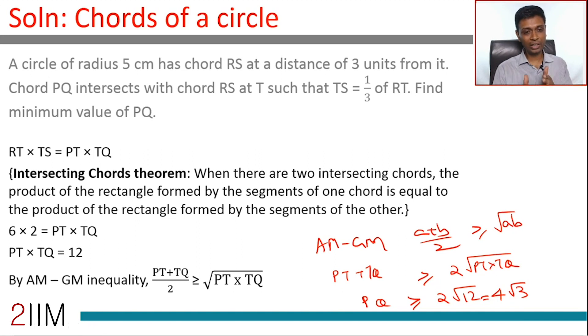Given a product, the minimum value of the sum will be when the numbers are equal. Given a sum, the maximum value of the product will happen when the numbers are equal. It's an interesting and important idea to hang on to in terms of inequalities.